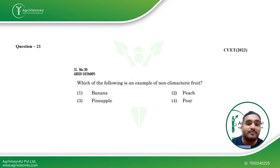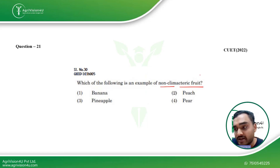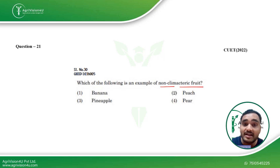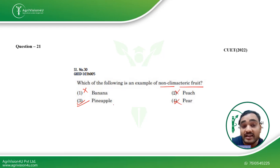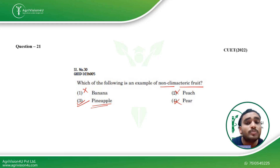Coming to the next question: which of the following is an example of a non-climacteric fruit? Climacteric fruits continue to respire and release ethylene gas even after harvest, while non-climacteric fruits are non-respiring. Banana, peach, and pear all continue to respire after harvest, making them climacteric fruits. Pineapple is therefore the non-climacteric fruit. In real life, pineapple has a considerably good shelf life — fruits with shorter shelf life tend to be climacteric, while those with longer shelf life are non-climacteric.